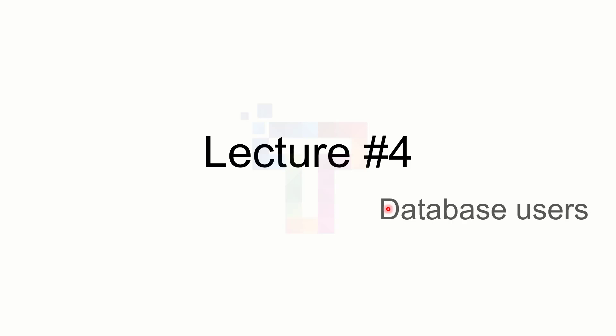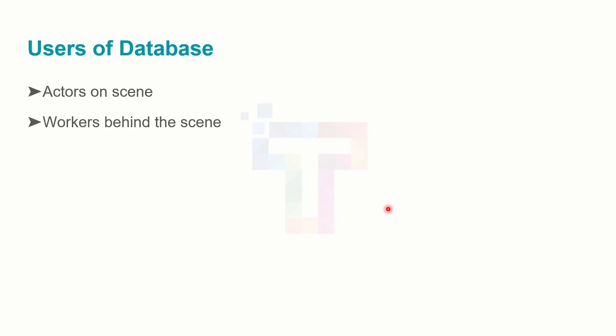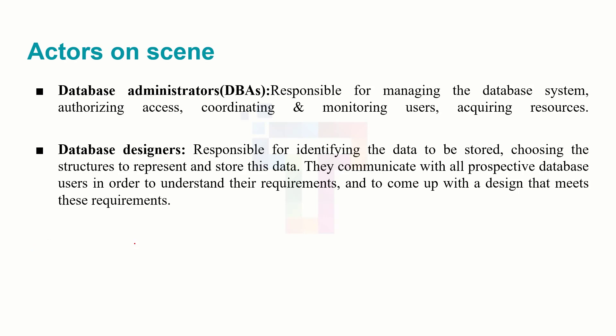This is the fourth lecture. In this lecture we will be seeing the database users. In the previous lecture we saw the advantages of database management systems. Today we will be seeing the users of a database. Basically we have two types of users: actors on the scene, and workers behind the scenes. Workers behind the scenes work for the database, like defining the database, adding tools, and adding packages in the database software.